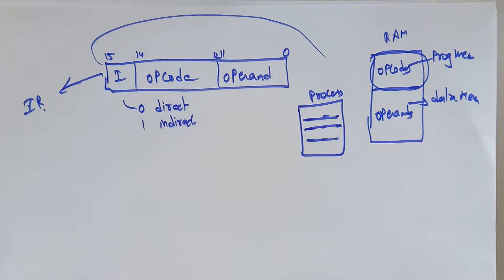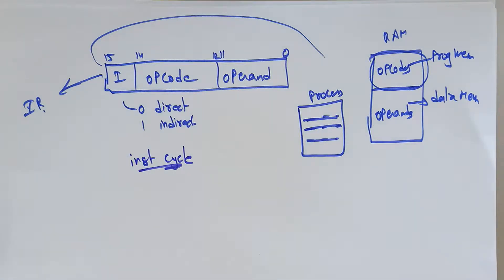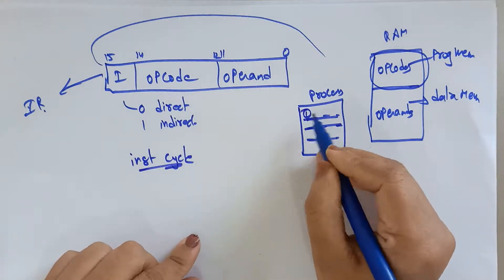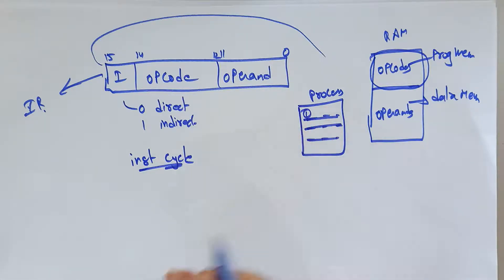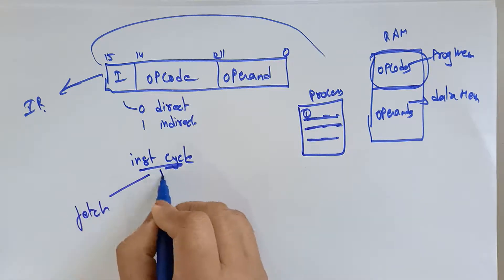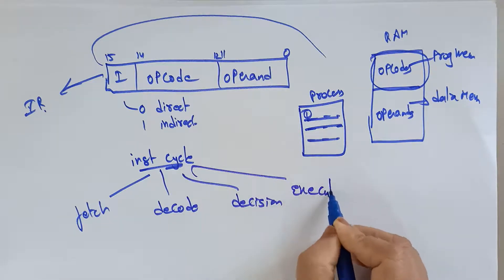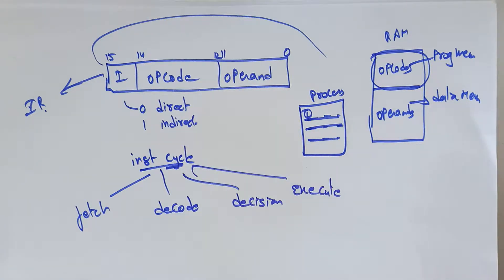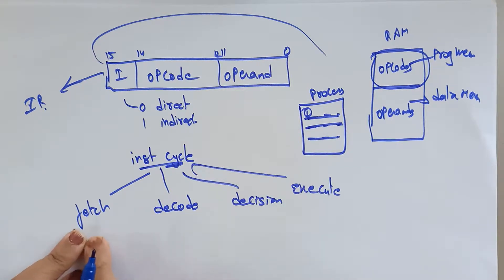Now, one more concept to clarify is the instruction cycle. The instruction cycle means if one instruction is in the processor and it wants to be executed, it goes through stages: fetch, decode, decision, and execute. Based on your processor and instruction pipeline, these instruction cycles can be increased — for example, adding a write-back stage.